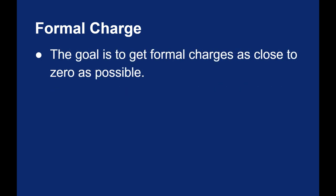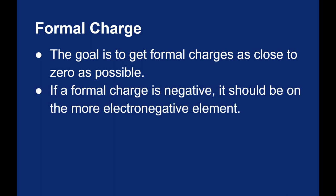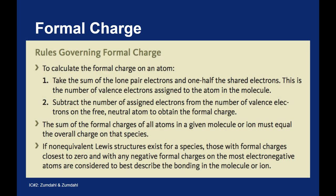Here are the rules. When you're assigning formal charge, you want to get as close to zero as possible — the less formal charge you have, the better. If you end up with a negative formal charge on an atom, it should be on the more electronegative atom. The formula is simple: take the number of valence electrons the atom started with and subtract the number of valence electrons it has in your Lewis structure. Lone pair electrons are counted fully; for each bond attached to the atom, you take only one electron, assuming the bonded electrons are split evenly between the two atoms.